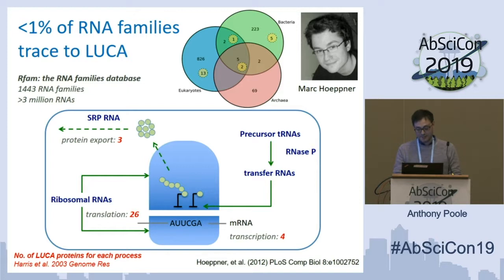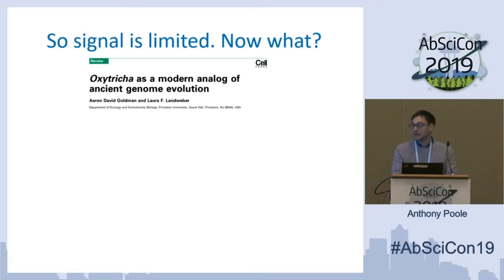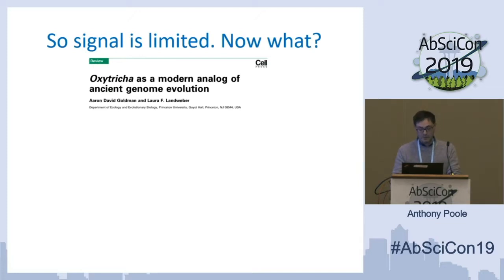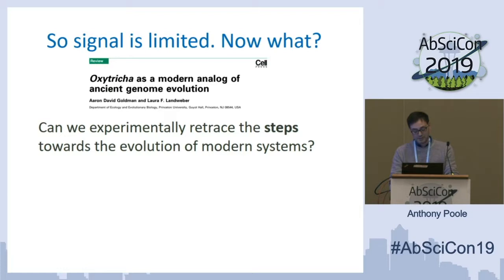If the signal's limited, what else can we do? One of the things that people do — and this is a nice little paper of Aaron's — is to look at modern stuff and say there are some interesting analogies between modern biological systems and presumed ancient systems. What we're trying to do is take that a little bit further and do some experiments to try and retrace some of the steps towards evolution of modern systems, but more from a biological perspective, coming top down, if you will.